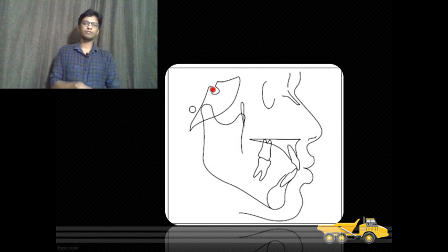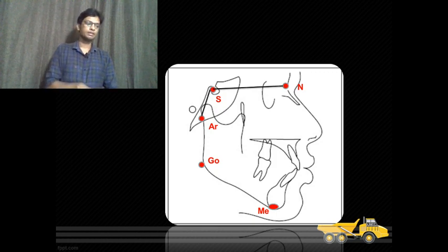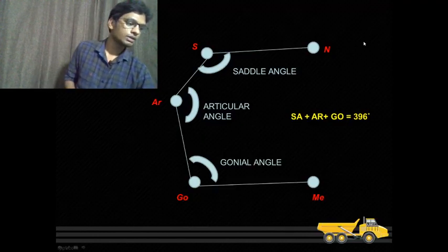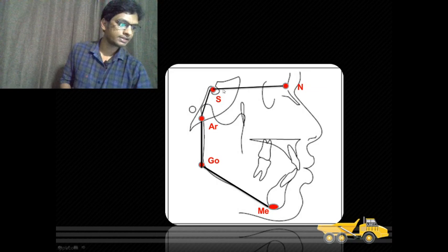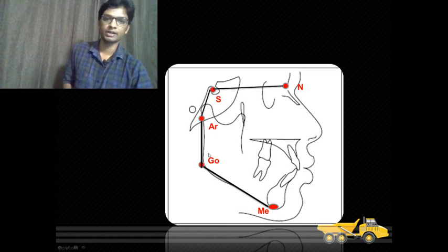To perform the analysis, you mark points S, N, Ar, Go, and Me and connect them. Draw a line from S to N, then S to Ar, then Ar to Go, then Go to Me. The angle N-S-Ar becomes the saddle angle, S-Ar-Go becomes the articular angle, and Ar-Go-Me becomes the gonial angle. When you add all three angles, the sum should be 396 degrees, which is considered normal.